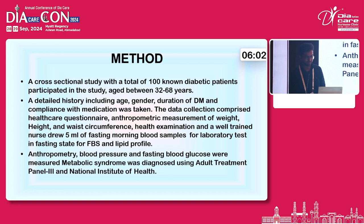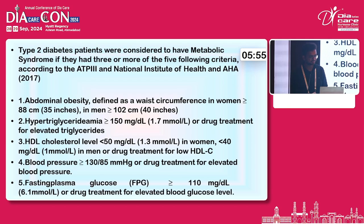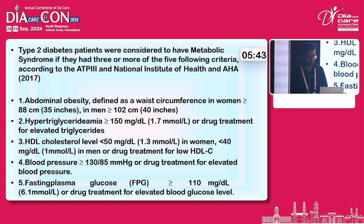Anthropometry, blood pressure, and fasting blood glucose were measured. Metabolic syndrome was diagnosed using Adult Treatment Panel 3 and National Institute of Health criteria. Type 2 diabetes patients were considered to have metabolic syndrome if they had 3 or more of 5 following criteria according to the ATP-3, National Institute of Health, and AHA.